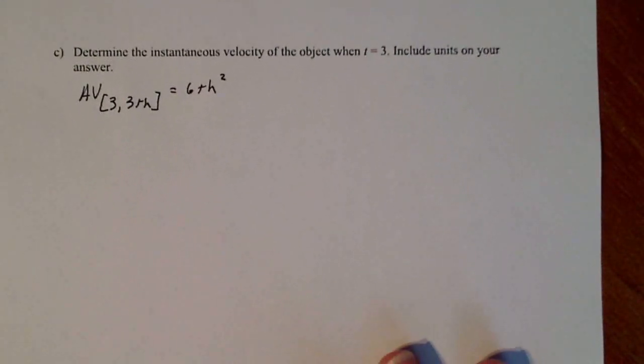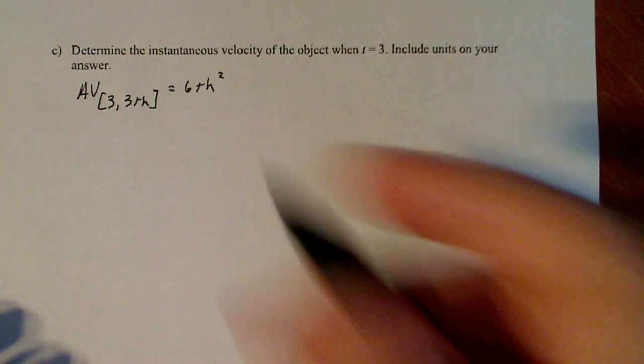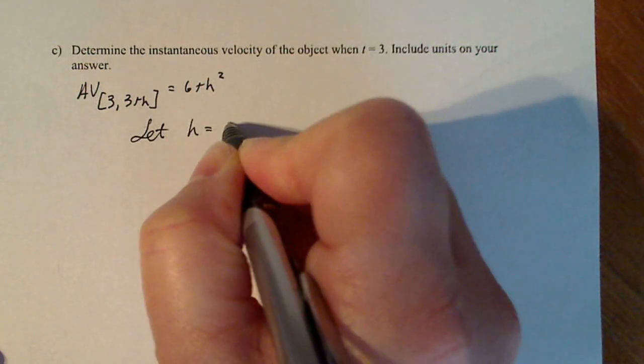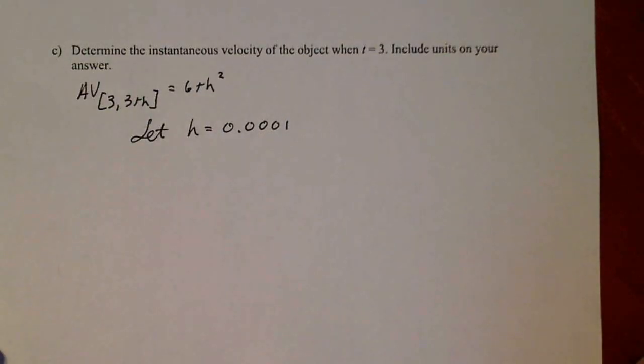Now remember instantaneous velocity is just average velocity over a really, really, really tiny interval. So if I make h tiny enough, then I can actually estimate the instantaneous velocity at t equals 3 using average velocity. So let's let h be tiny: 0.0001. That's a really small number for an estimation here accurate to about four decimal places.